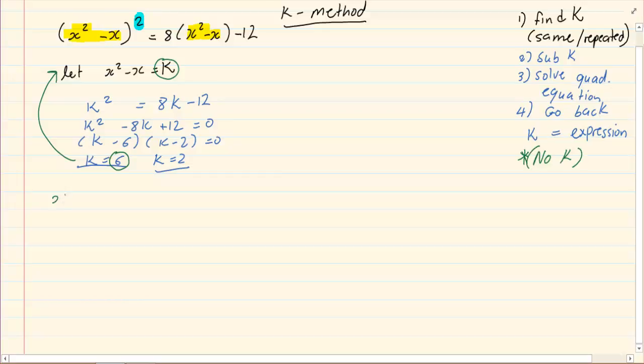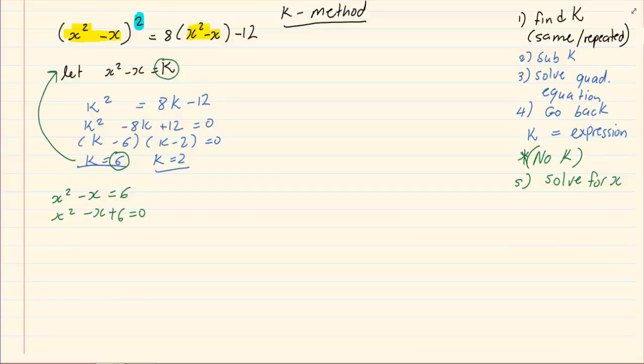So we would have x² - x = 6. Then you would solve for x using your quadratic equation rules, your previous knowledge on solving for x. In this case, it is a trinomial.